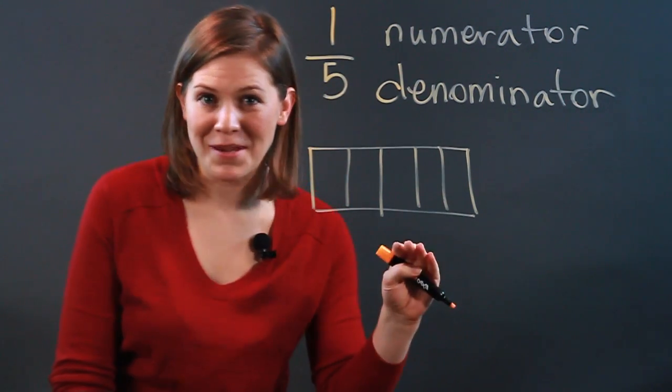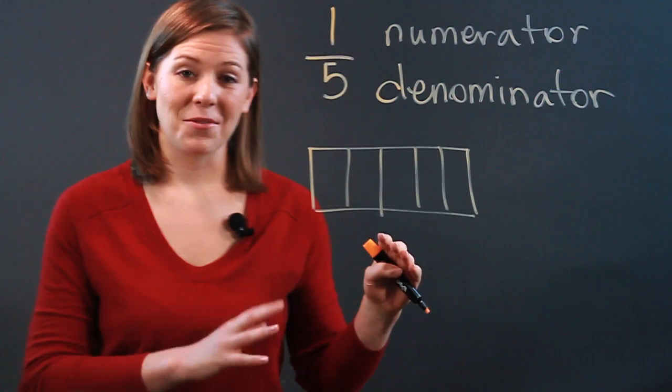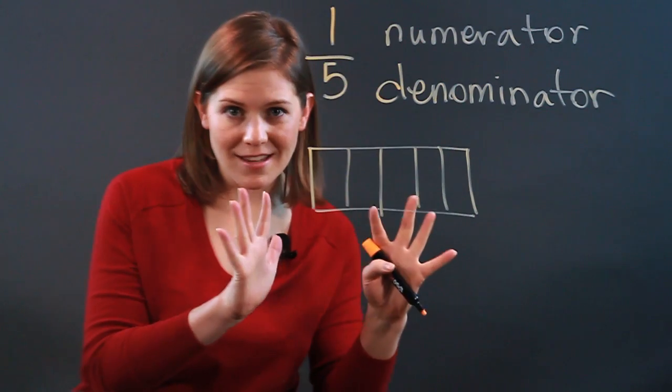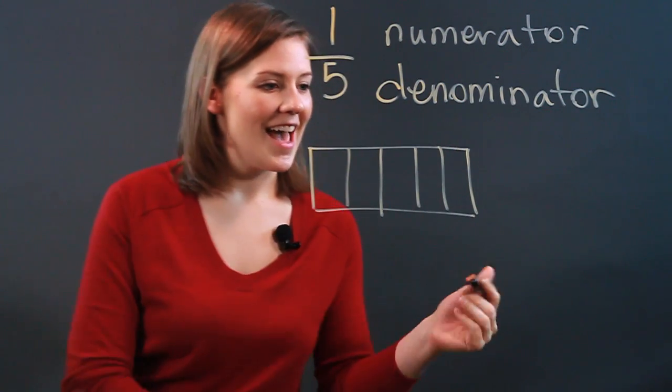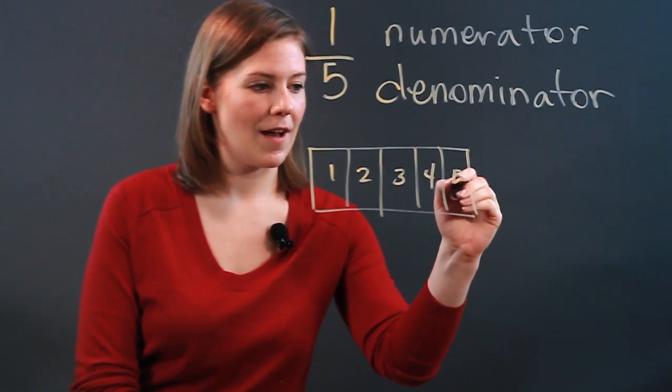they would have to be equal pieces. Not like what I've drawn here, but in order for a fraction to work, they have to be equal parts, right? So let's pretend that I drew this perfectly, and we have one, two, three, four, five parts.